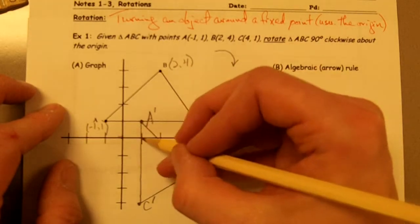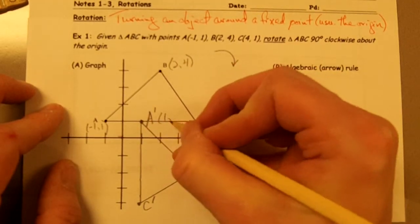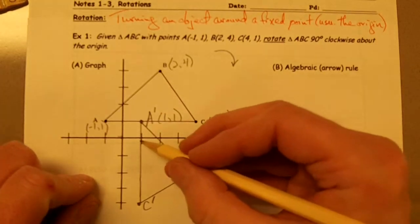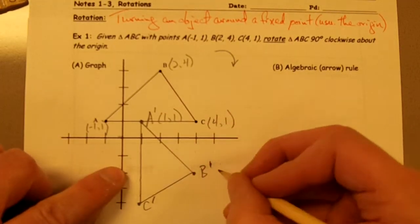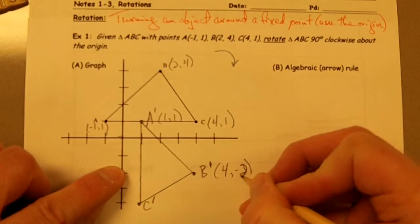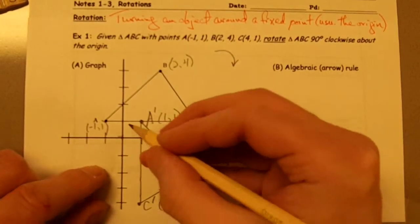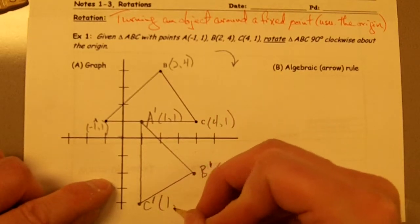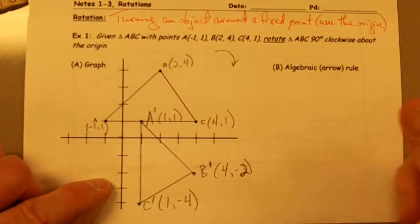A prime, let's see, A prime is (1, 1). I'm just reading this off the axes here. B prime is (4, -2), and C prime is (1, -4). All right.